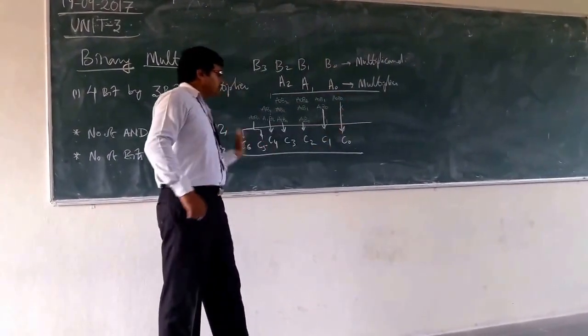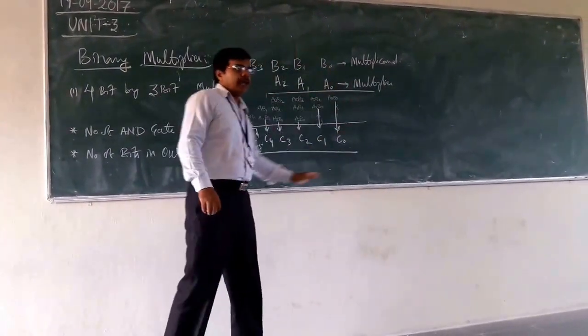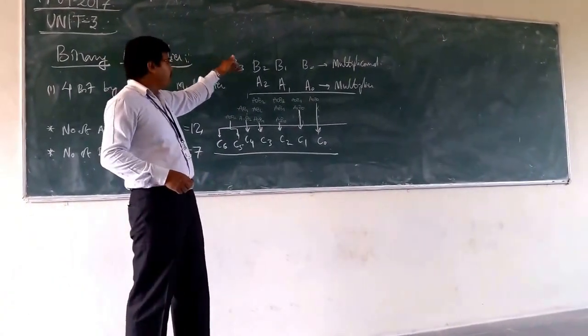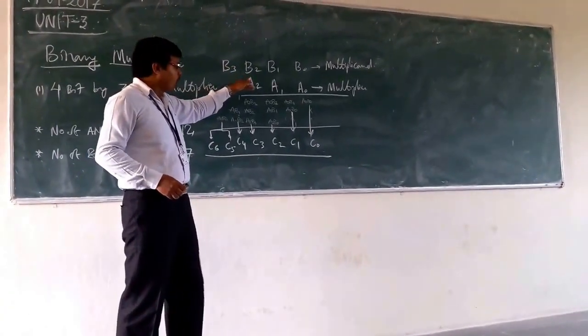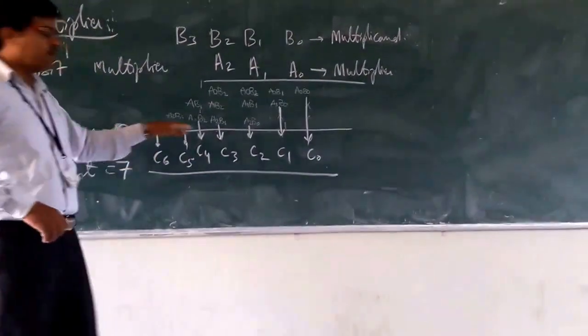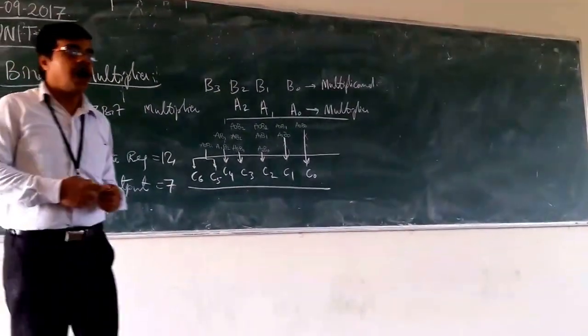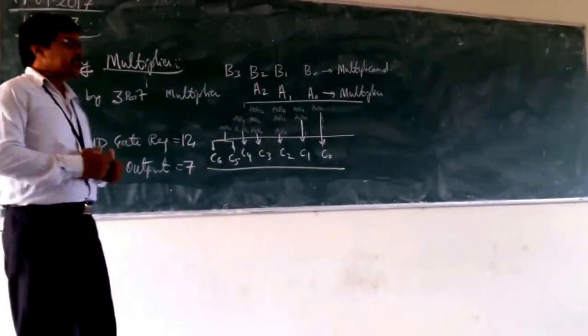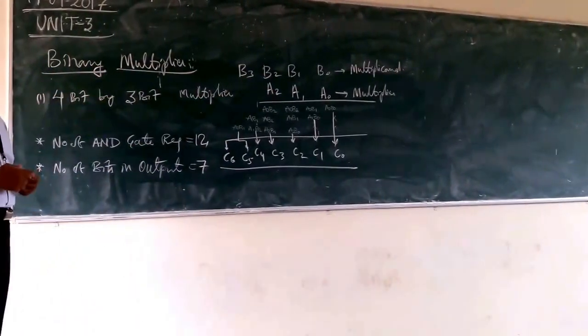In case we are seeing, this is the general way of multiplication when we are going for 4-bit by 3-bit. This is the way that we have, for example, in case of the decimal. On the basis of this, we will go for the designing of your 4-bit by 3-bit multiplier.